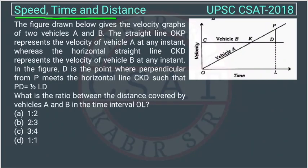This is a question from speed, time and distance asked by UPSC and CSET paper of 2018. This is a very interesting question. The figure drawn below gives the velocity graph. We should know what a velocity graph is. They have given the velocity graph of two vehicles A and B.